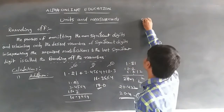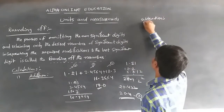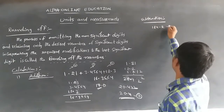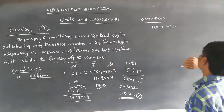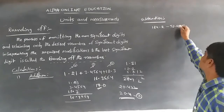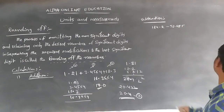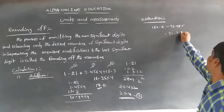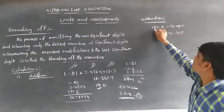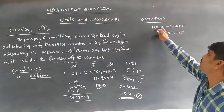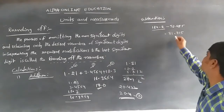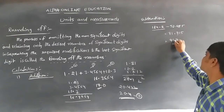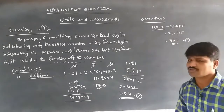For subtraction, the same method applies. For example, 124.2 minus 52.485 gives 71.715. Here, 124.2 has only one digit after the decimal point, so we round off to one decimal place, giving 71.7, which has 3 significant figures.